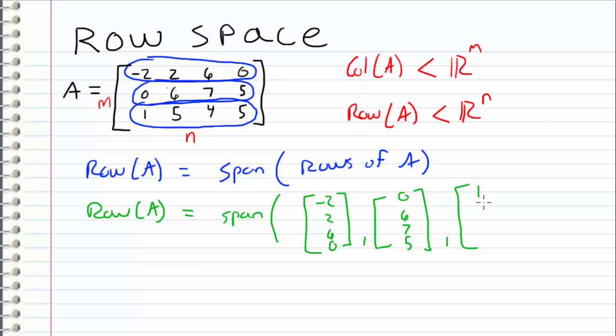and one, five, four, five. So the row space is just the span of the vectors that create the rows of our matrix.